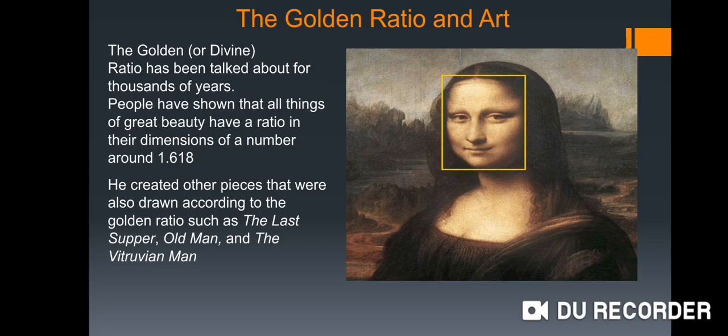If you see the Mona Lisa painting, one can have this ratio as a golden ratio as 1.618. He created other pieces that were also drawn according to the golden ratio such as the Last Supper, Old Man and the Vitruvian Man.